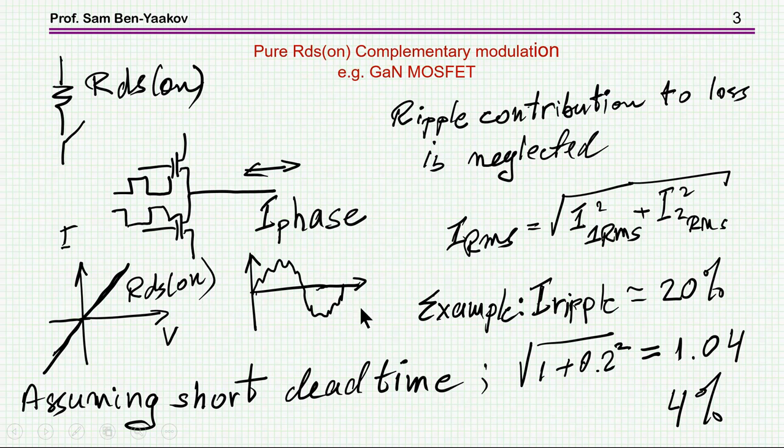Now another approximation I'm doing is that I'm neglecting the ripple. Now, ripple obviously will increase the losses, because the RMS of the current is larger, but it has to be a really fairly large value for the ripple to make a substantial impact. Because if you look at the total RMS, it is the square root of the sum of the squares of the current.